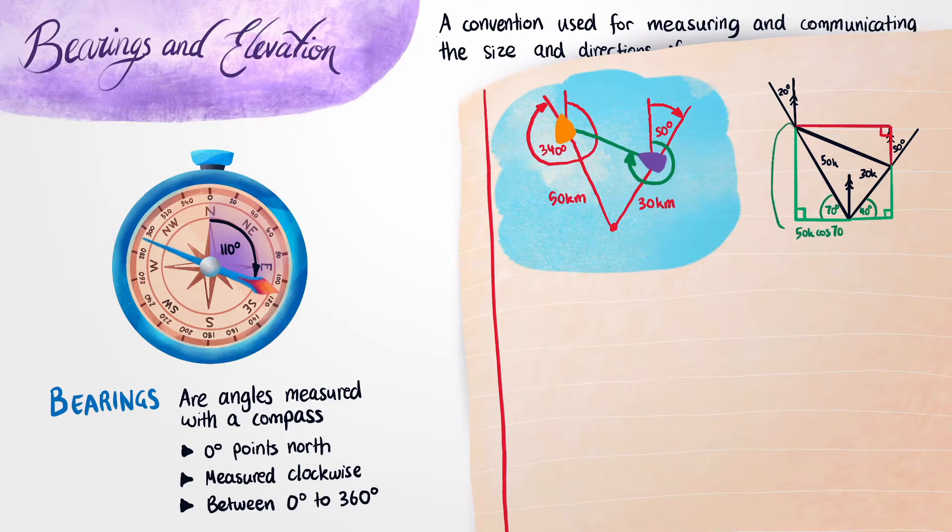If we were to repeat this on the standing side over here, we'd notice that it's also 50K sine 70. Now this side over here would be 30K cos 40 by using this triangle, and this triangle over here would be 30K sine 40.